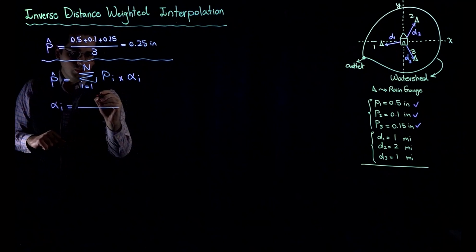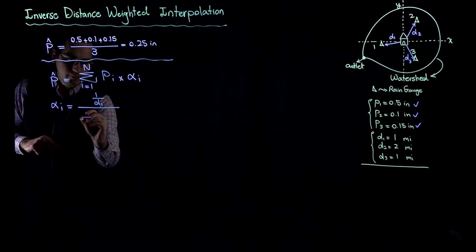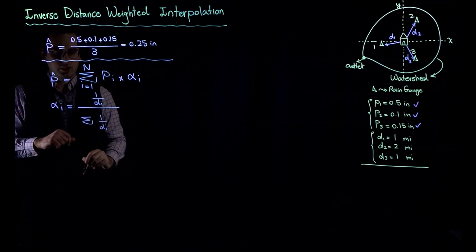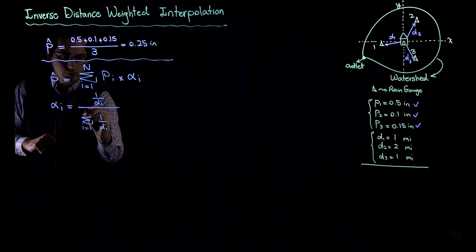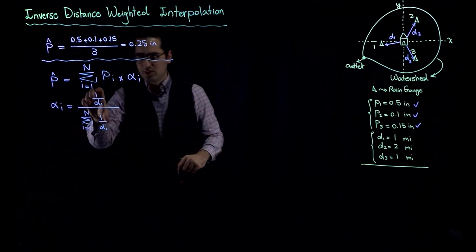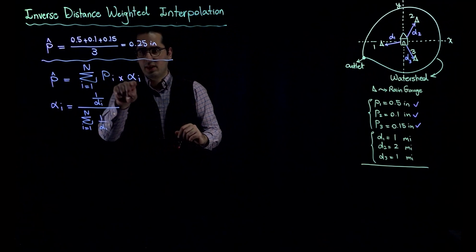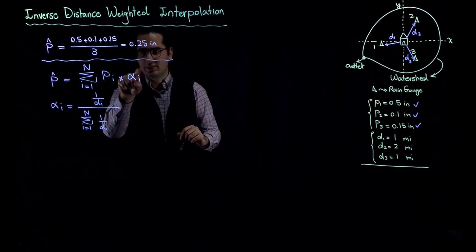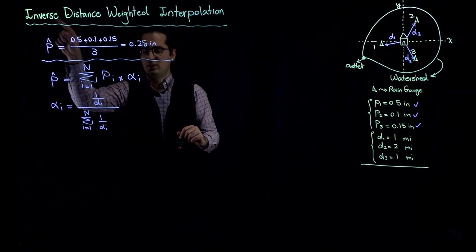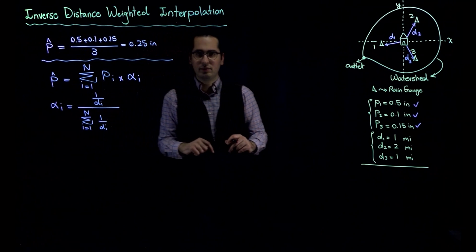Alpha_i is defined as one over the distance to each gauging station, divided by the summation of one over the distance of each gauging station from one to N, where N is the total number of gauging stations. The weight of precipitation for each gauging station is multiplied by a factor that is a function of one over distance — that's why it's called inverse distance.